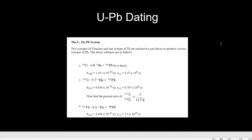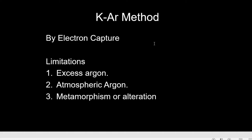Uranium-238 has a very long half-life of 4.5 billion years, which is more than long enough to date most rocks on Earth. It is not reliable for dating rocks under one million years old, but it is particularly useful for dating rocks older than two or three million years. The oldest rock dated so far was dated using this method on a zircon crystal obtained inside another rock.